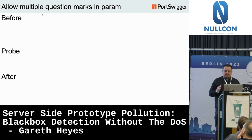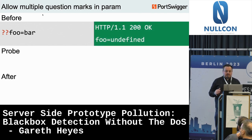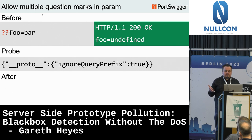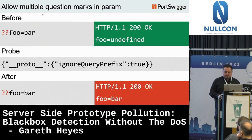Another technique modifies Express to allow a question mark in a parameter name. Before the probe, sending two question marks with 'foo=bar' shows foo as undefined — the application isn't reflecting the parameter. We send a probe with prototype pollution changing the Express option 'ignoreQueryPrefix' to true, which ignores one of the question marks. When we send the request again, the value is reflected correctly. This technique can be combined with prototype pollution and cache poisoning.